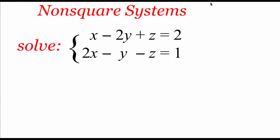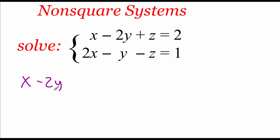A non-square system is a system where the number of equations does not match up with the number of variables. So you can see in here we've got three variables, but only two equations. We're still going to work towards that row echelon form. So the top equation we're going to keep the same: x minus 2y plus z equals 2.